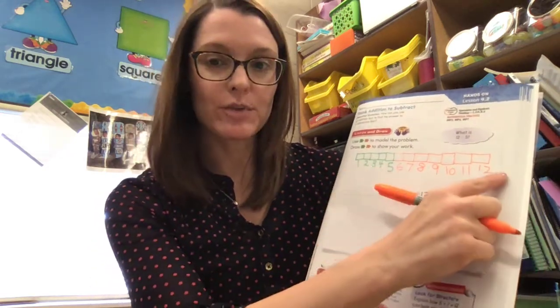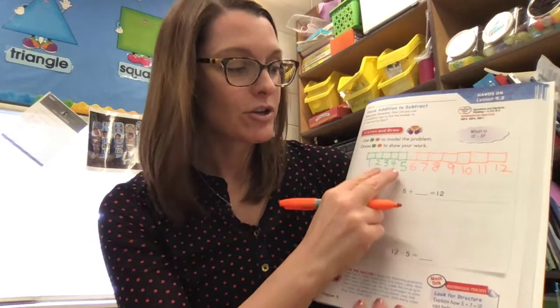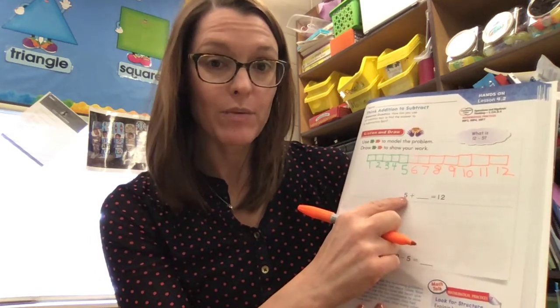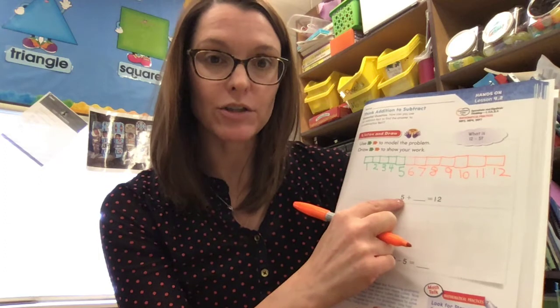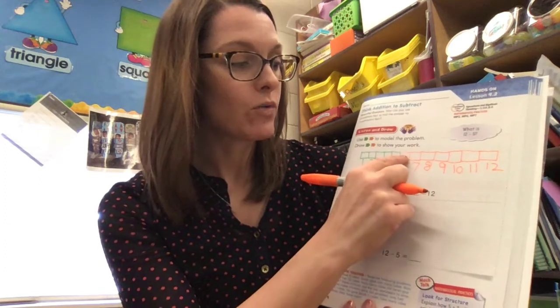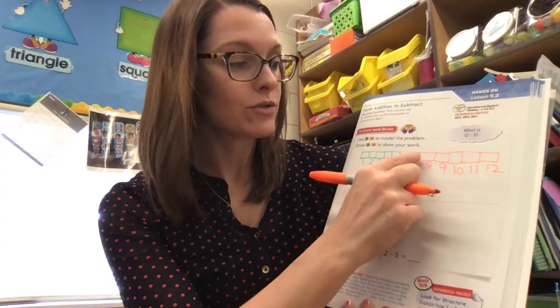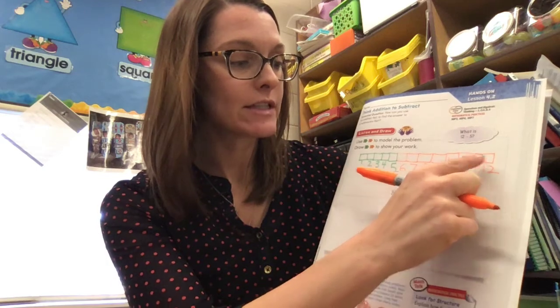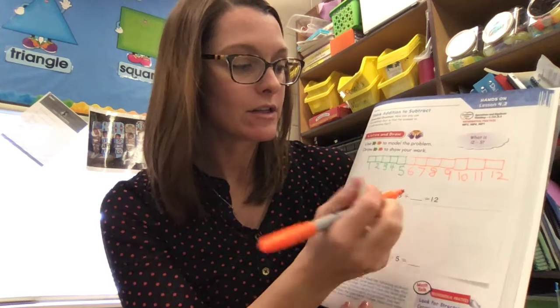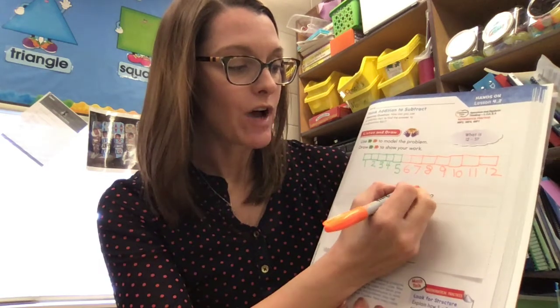So now I have 12 cubes all together. I started with five green, and now I'm going to see how many cubes I needed to draw to get to 12. Let's count: one, two, three, four, five, six, seven. So five plus seven equals 12.